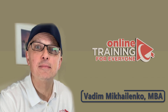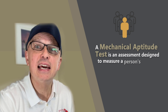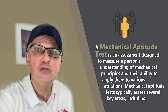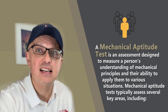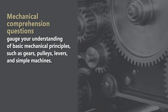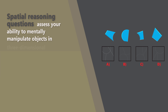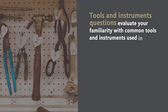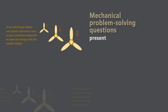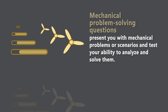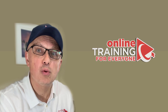In this section, we will look at sample mechanical aptitude questions typically seen on the test. A mechanical aptitude test is an assessment designed to measure a person's understanding of mechanical principles and the ability to apply them in various situations. It typically assesses mechanical comprehension, including gears, pulleys, levers, and simple machines; spatial reasoning; familiarity with tools and instruments; and mechanical problem-solving.